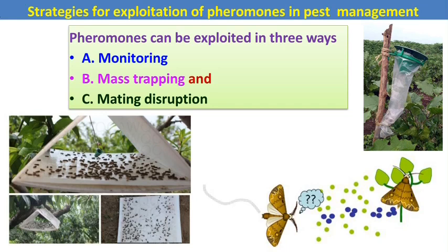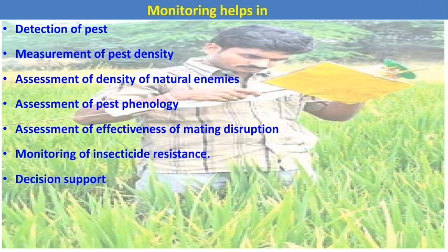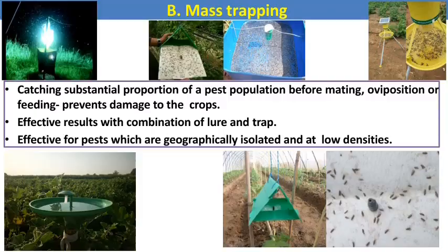The use of pheromones in integrated pest management has three main applications: monitoring, mass trapping, and mating disruption. For monitoring, pheromones are a highly sensitive means of detecting both the presence and density of pest species. Insect infestation can be detected at a very early stage, and this can alert farmers regarding outbreaks of important pests. Monitoring also helps in measuring pest density, assessing natural enemy density, pest phenology, effectiveness of mating disruption, insect resistance, and decision support.